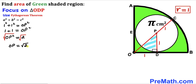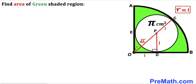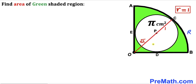Now, OC is the radius of the quarter circle, labeled as uppercase R. This radius equals the sum of the two individual segments: OP plus PC, which is square root of 2 plus 1. Therefore uppercase R equals 1 plus square root of 2.